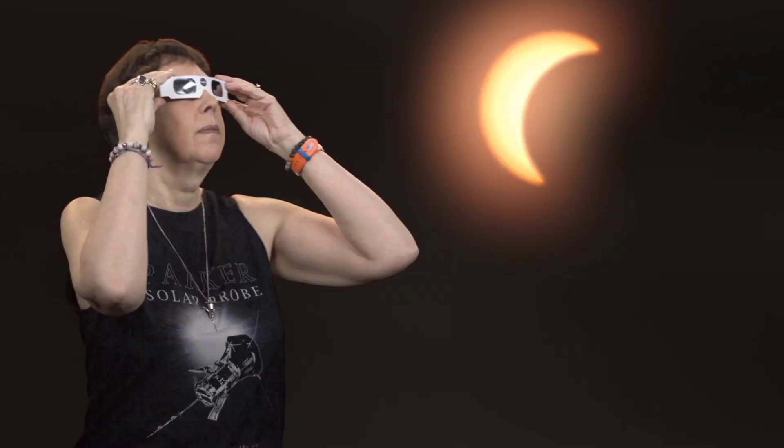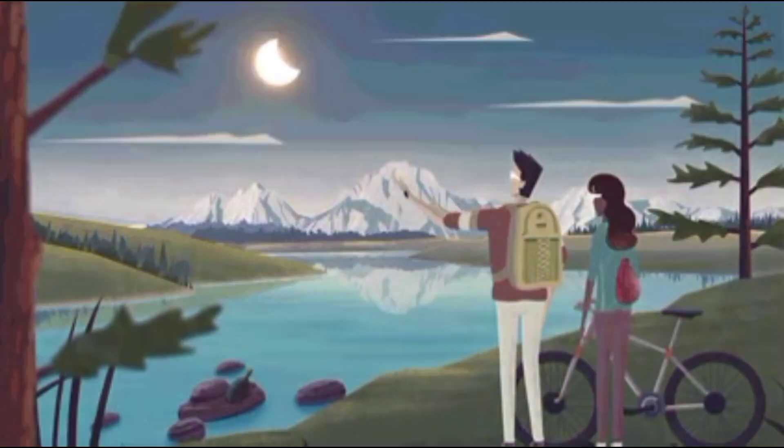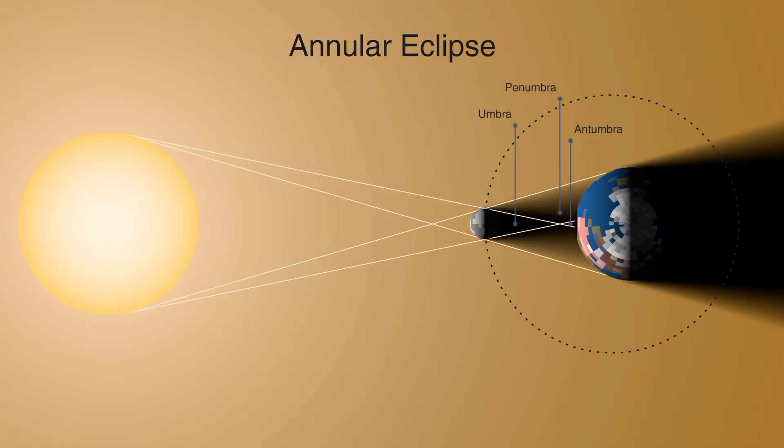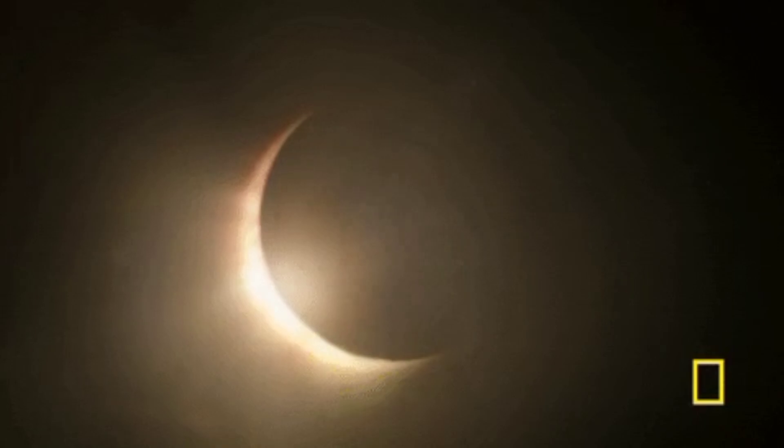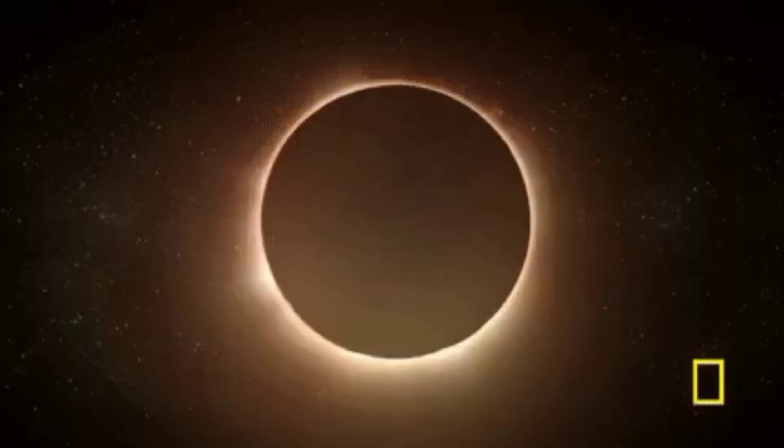On April 8, 2024, millions of people around the world will gather to witness this rare astronomical event when the Moon passes between the Sun and Earth, casting its shadow over our planet. But why does a solar eclipse occur? It comes down to a perfect alignment of all celestial bodies.